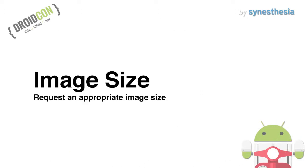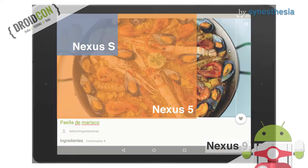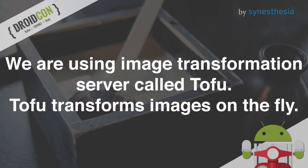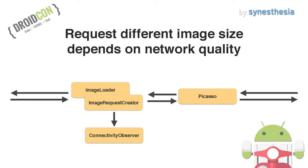Next, image size. There are many display sizes in Android — small devices don't require large images. So we request an appropriate image size for the viewport. Because of that, we are using an image transformation server called TOFU. TOFU transforms images on the fly and has functions like resize, crop, and specify quality. In addition, we request different image sizes depending on network quality. I look at network type to detect network quality. I tried to use Network Connection Class developed by Facebook, but calculating accurate round-trip time was difficult. Low-quality images are 40% smaller than full-quality images.